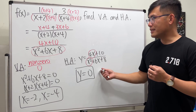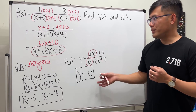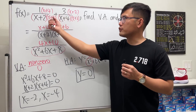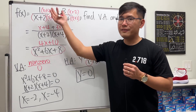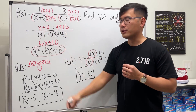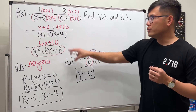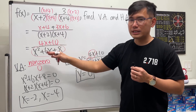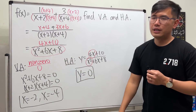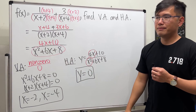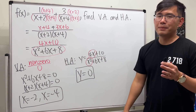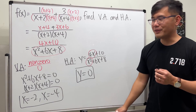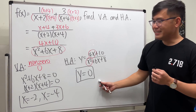But just be really careful: sometimes when you combine fractions and have more complicated versions, once you combine them, you might cancel out some common factors. Leave a comment down below if you want to see an example. But for now, this is it.